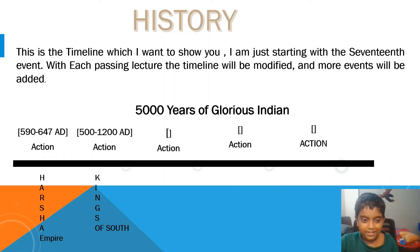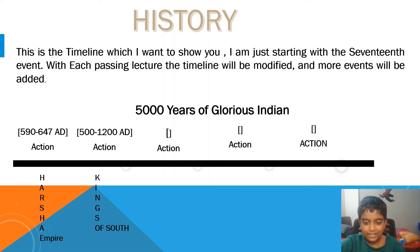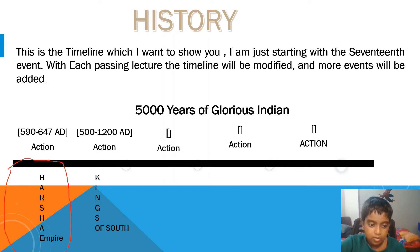This is the timeline which I want to show you. I am starting with the 17th event, and with each passing lecture the timeline will be modified and more events will be added — 5000 years of glorious Indian history. From 590 to 647 AD I covered Harsha. You can see that video.